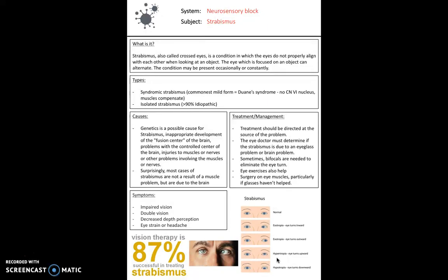There are two types of strabismus: syndromic strabismus and isolated strabismus. Syndromic strabismus is a common mild form, such as Duane syndrome. Isolated strabismus is 90% idiopathic. You just need to know that these two types exist.